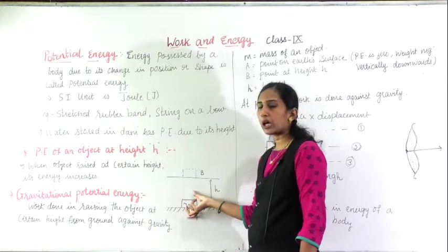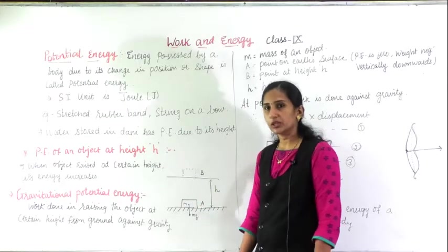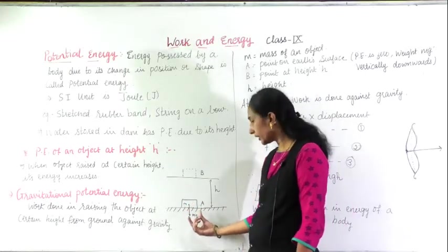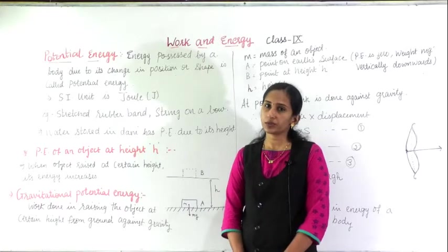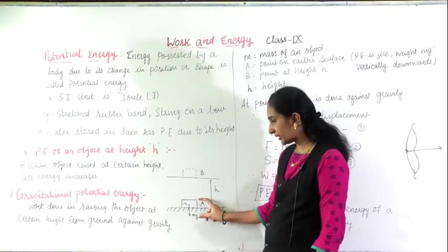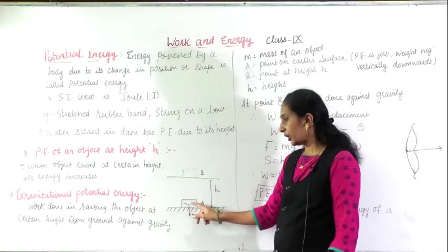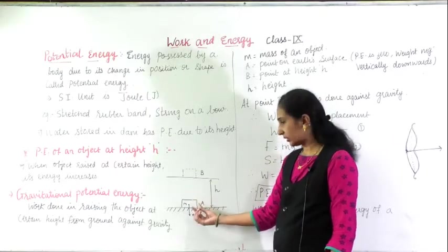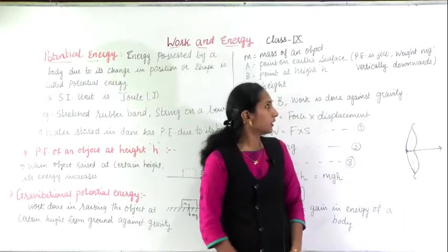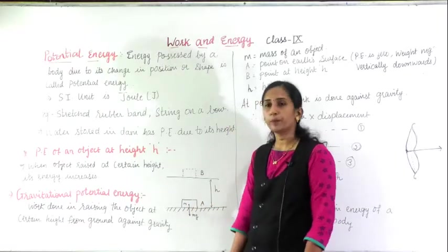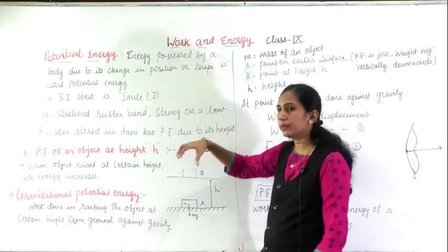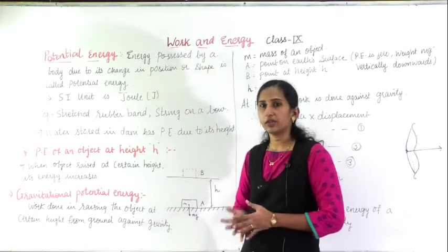When it was lying on the ground, the weight of the object is acting perpendicular downward. You have studied: weight of an object is equal to mass into gravity. So at this condition it is mg, and weight is acting vertically downwards. Weight is mg and it acts vertically downwards. Now I have lifted and kept at point B — means I have done work against the gravity.